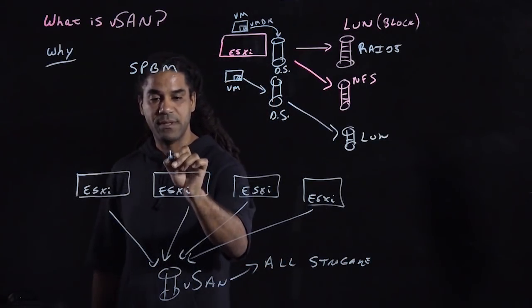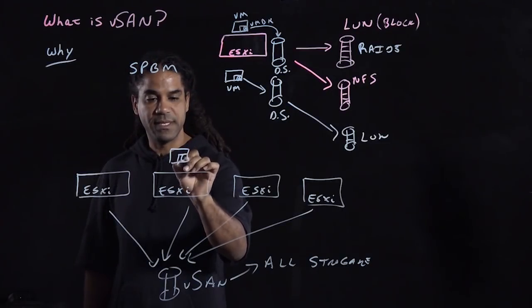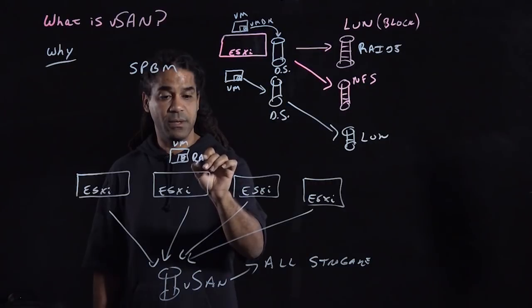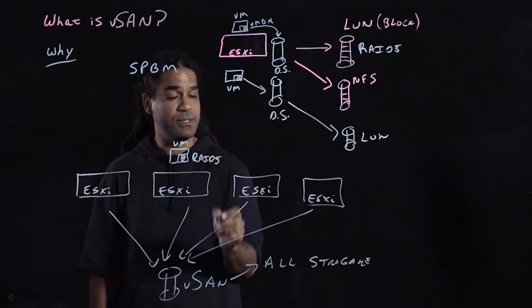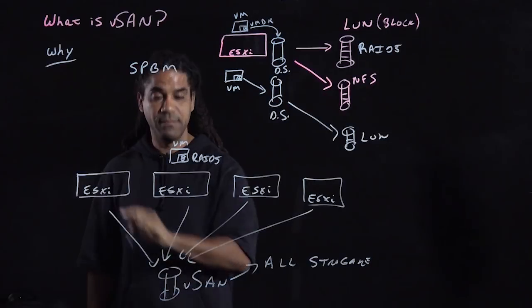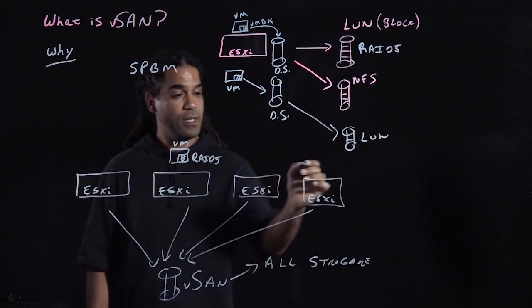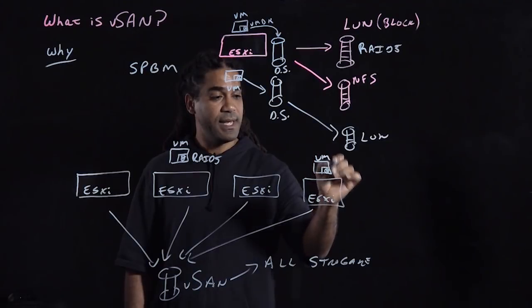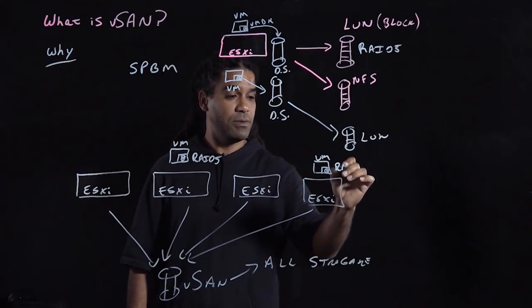So if you have a VM on this host with its VMDK, and that VM requires RAID 5 protection or equivalent to it, that VM can be stored in the vSAN datastore. You can have a second VM in any host in the cluster, and this one requires RAID 0.